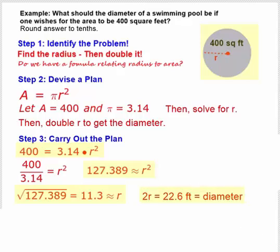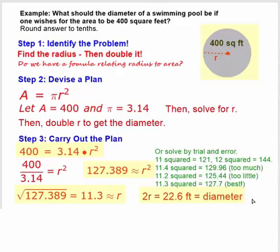Now there is an alternative to the algebraic method of extracting square roots. We could solve by trial and error to find that value of 11.3. If we take 11 and we square it, we get 121, and 12 squared is 144.